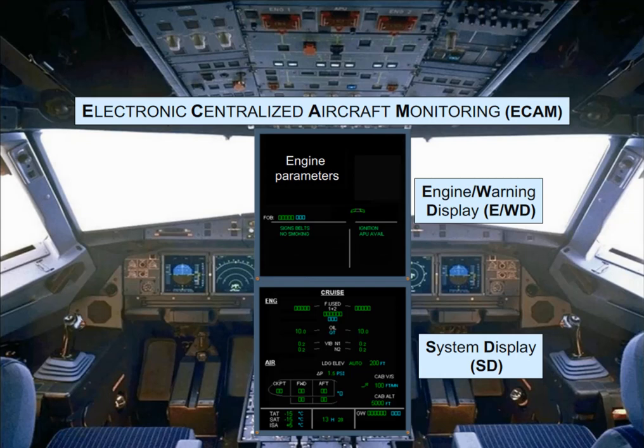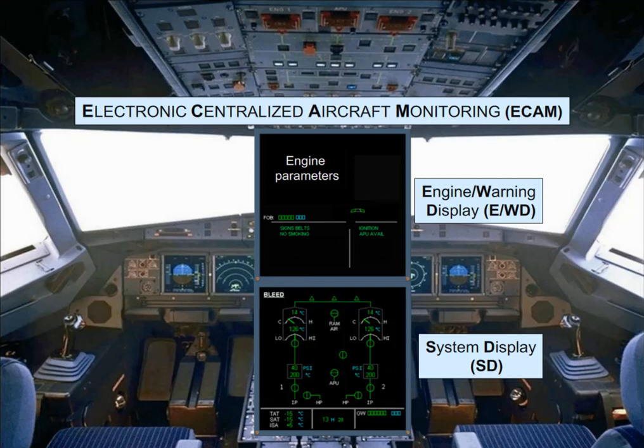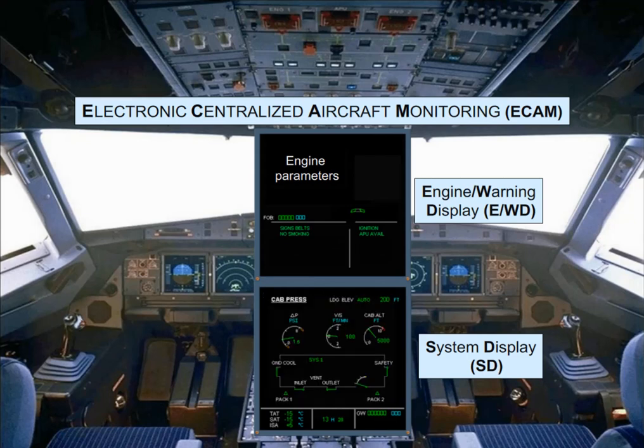Various aircraft system parameters can be viewed on these screens. As an example, you can see a sequence of all SD pages, one after the other.